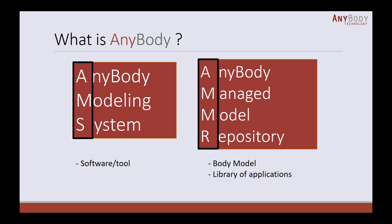Now there will be a short introduction of AnyBody for those who are new to this technology. What is AnyBody exactly? We usually divide it into software and model. For software, the AnyBody Modeling System — its abbreviation is AMS — is the software which runs simulations of the human musculoskeletal system. And with this software there is the AnyBody Managed Model Repository, which we call AMMR.